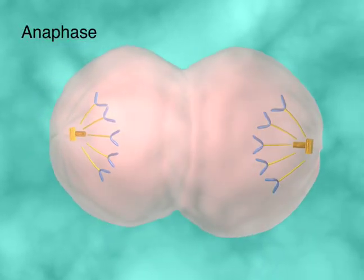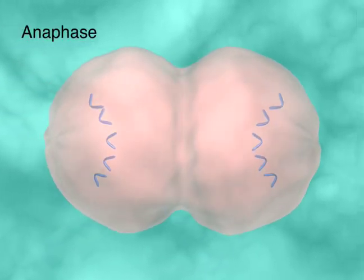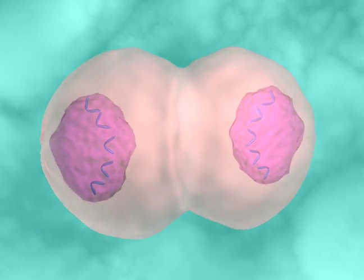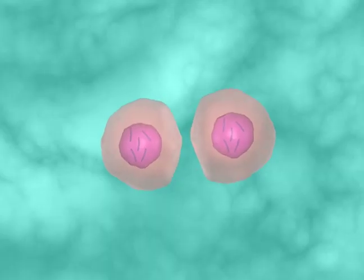Once all chromosomes have achieved bi-oriented attachments, the cells are able to move into anaphase, cleave the cohesin holding the chromatids together, and complete cell division.